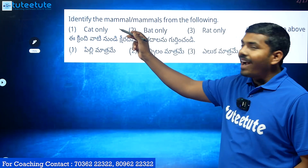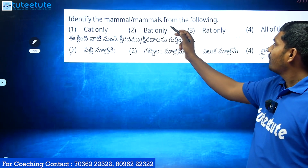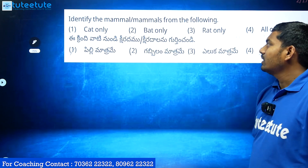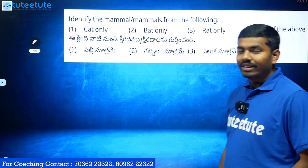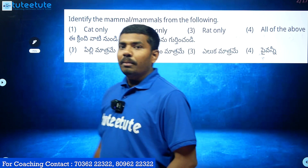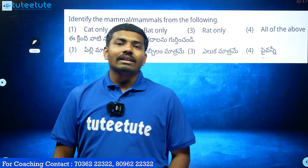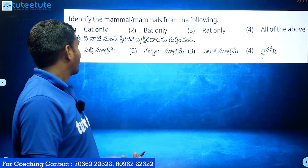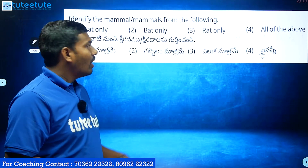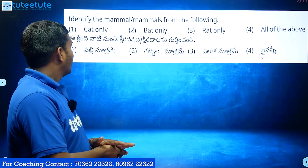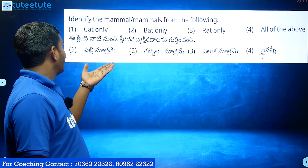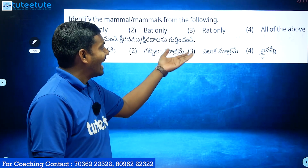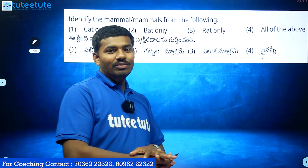We will identify the mammals from the following. The options are: A. Cat only. B. Bat only. C. Rat only. D. All of the above.